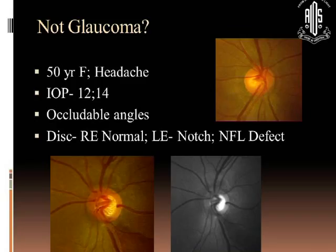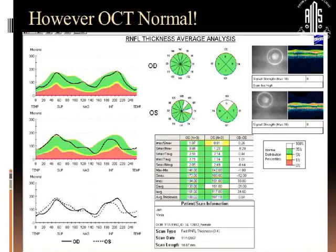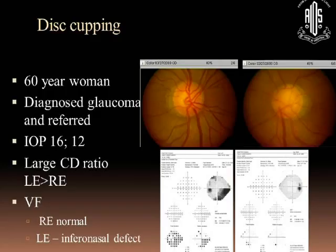A 50-year-old female with headaches, pressures of 12 and 14, occludable angles — one eye is absolutely abnormal, the other eye is okay, and corresponding visual field defects are very much there. But you look at the OCT and the OCT is normal. Again, these things reflect that all three — disc, field, and OCT — may not go together. If you have a structural classical damage like that in the disc, you don't really have to worry too much about what the other machines are telling you.